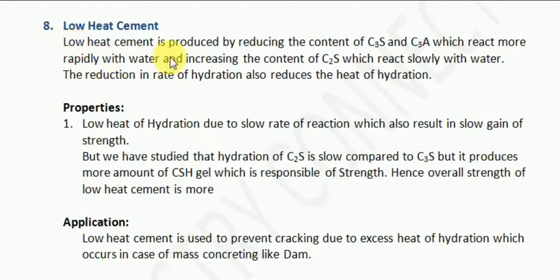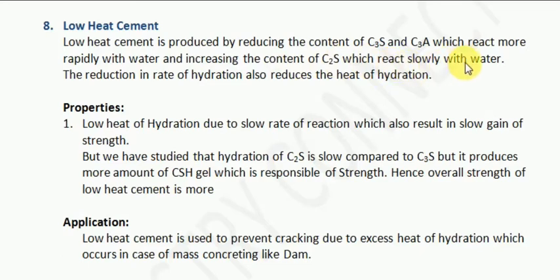Low heat cement is produced by reducing the content of C3S and C3A, which react more rapidly with water, and increasing the content of C2S, which reacts slowly with water. The reduction in the rate of hydration also reduces the heat of hydration. So, using very basic chemical reaction knowledge, we can produce low heat cement.